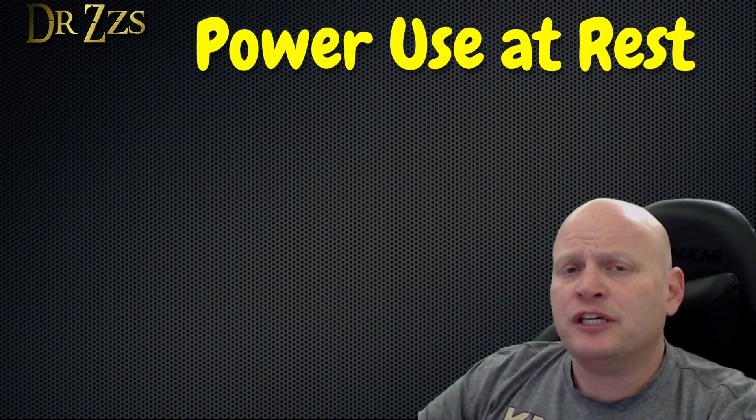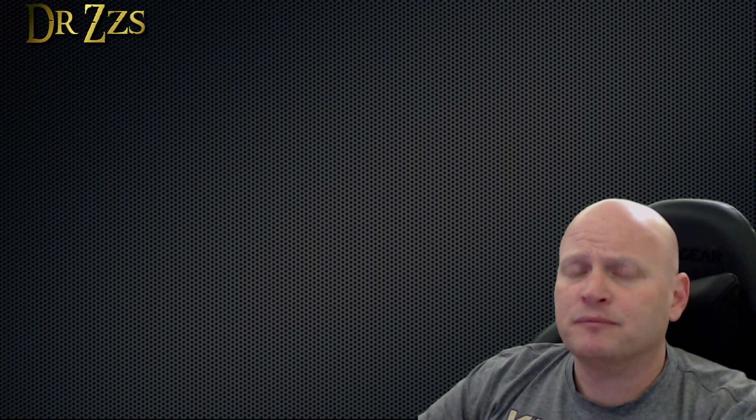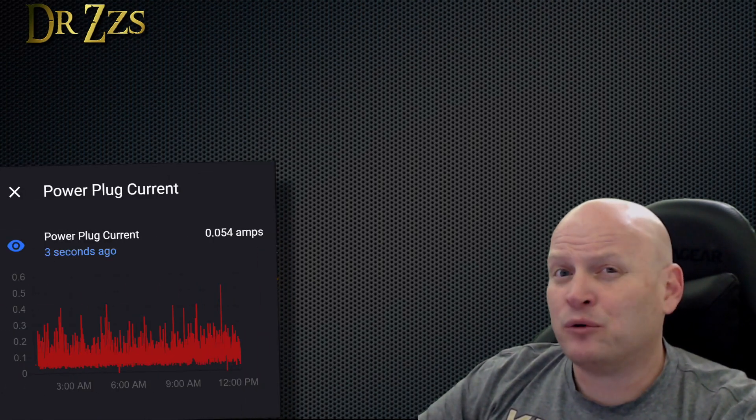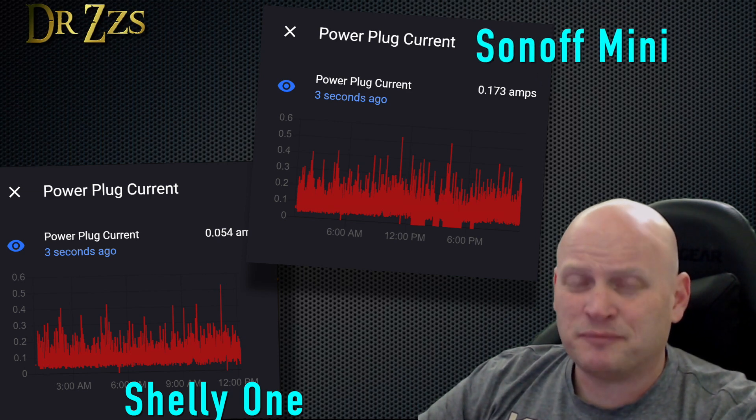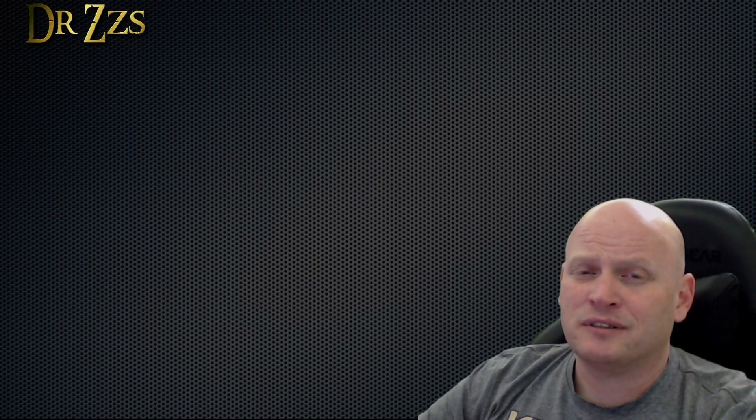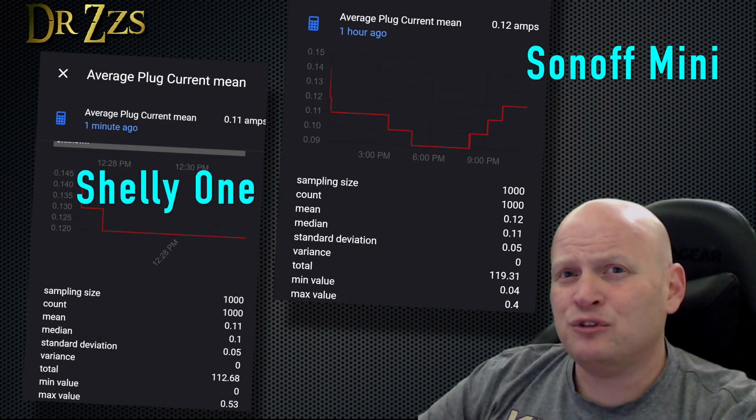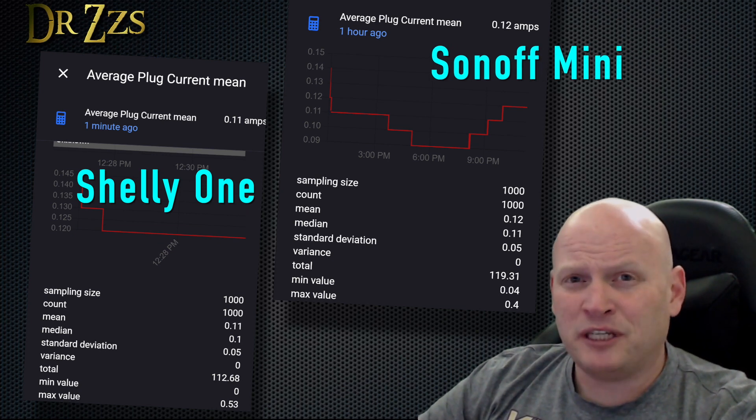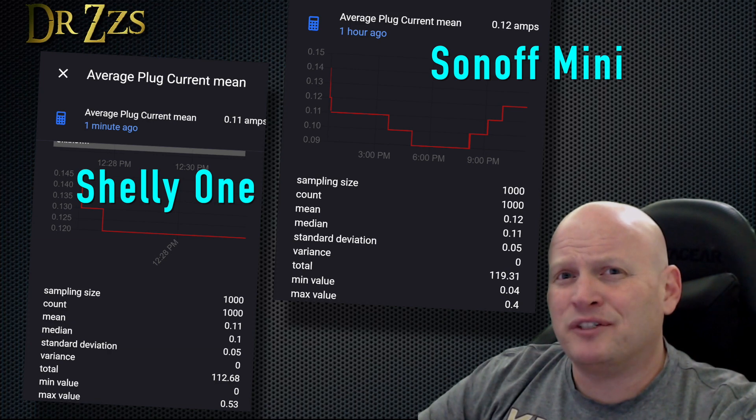I also looked at resting power consumption. I took each of these devices, connected them to a Sonoff S31 for power monitoring, and let them idle for eight hours. As you can imagine, the power consumption fluctuates quite a bit, even at rest. So I took the average over those eight hours and a thousand data points. And the results? Almost identical. On average, the Shelly used 0.11 amps and the Sonoff Mini 0.12 amps. Doesn't seem like a big enough difference to matter to me. But now you know.